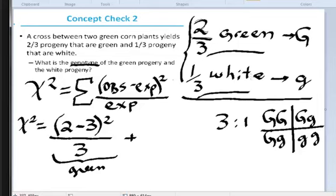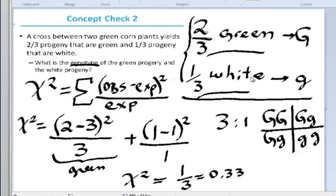Then you add the calculation for your white phenotype, which is 1 out of 3 that is observed, and you expect, okay, you expect 1, so this will give you, so looking here at our chi-square value of 0.33,